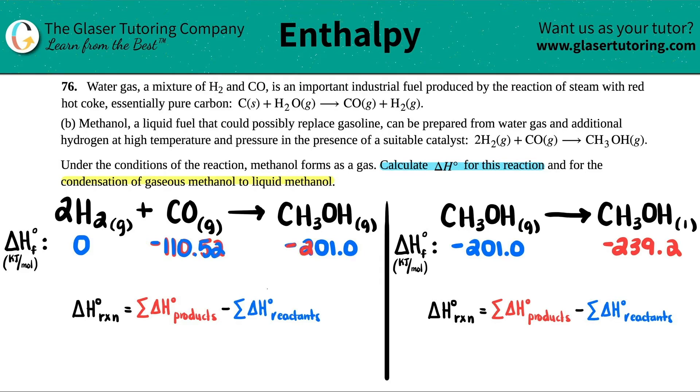Let me just write this over. This would be negative 110.52 and then this is negative 201.0. Now for each one of them we take the numbers that we found and we're going to multiply them by how many we have in our balanced equation.